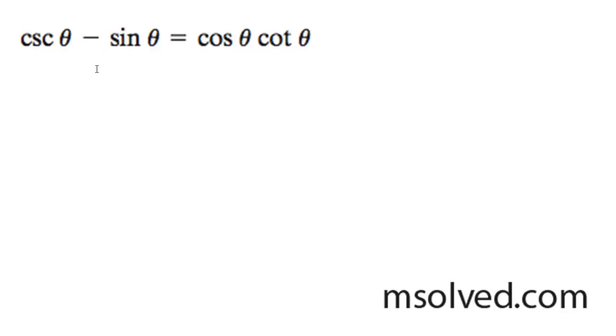Prove the left side of this trig identity is equal to the right. We're going to start off here by writing this in simpler terms. We've got 1 over sine theta, same thing as cosecant theta, minus sine theta.